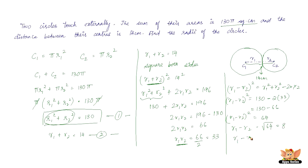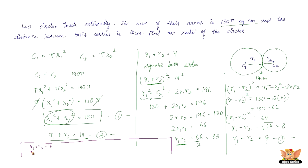So r1 minus r2 equals 8 — that's our third equation. Solving equations 2 and 3 simultaneously: r1 + r2 = 14 and r1 - r2 = 8. Adding them: 2r1 = 22, so r1 = 11 centimeters. Since r1 + r2 = 14, r2 = 3 centimeters. It's a much smaller circle than drawn — that's just an illustration.